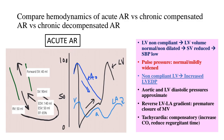In acute AR — which can happen with sudden rupture of a valve due to infective endocarditis or trauma — the left ventricle is caught unawares. It is surprised by the sudden volume and doesn't have time to dilate to accommodate the extra blood. Since it doesn't dilate, its forward outflow is reduced, stroke volume is reduced, and the systolic blood pressure is low. As a result, the pulse pressure is either normal or only mildly widened — quite opposite to chronic AR. This sudden volume increase also raises the left ventricular end-diastolic pressure.